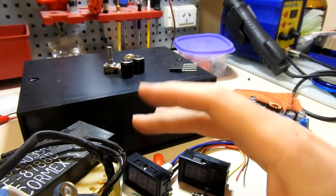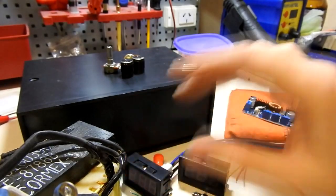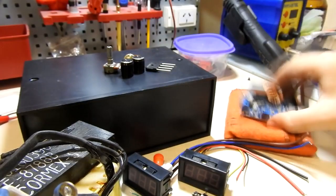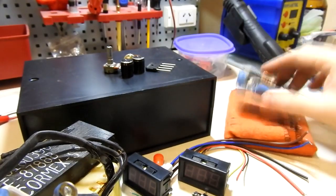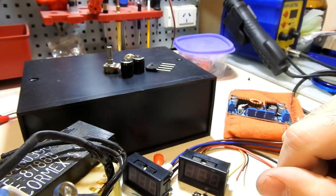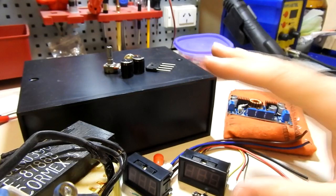Si quisiéramos, podríamos usar una fuente de notebook de 19 volt, que también tiran 3-4 amperes. Y nos bloqueamos toda la parte de rectificación y todo eso. Y directamente lo conectamos acá. Yo tenía esto y quiero usar esto. Así que esta es la parte introductoria de lo que vamos a utilizar.